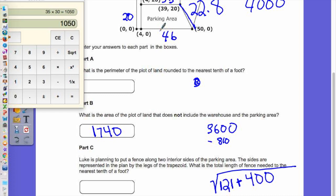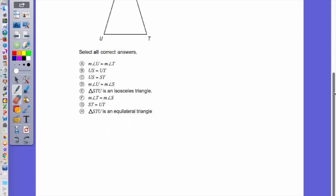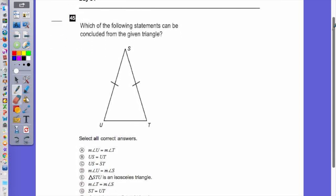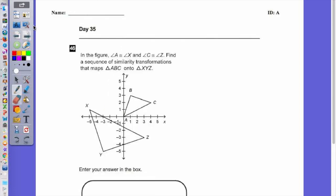Did you follow that? Round to the nearest tenth of foot is 42.8. I'm going to go on to the next problem. Which of the following statements can be concluded from the triangle? U has to be congruent to T. US and UT, we don't know if those are congruent or not. But US and ST are congruent. They're even marked for us. We don't know if the measure of angle U is congruent to the measure of angle S. We do know that STU is an isosceles triangle.